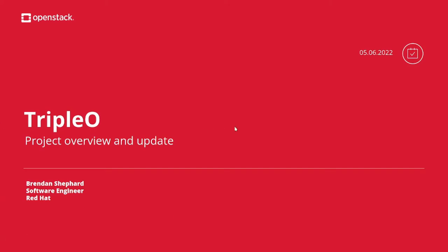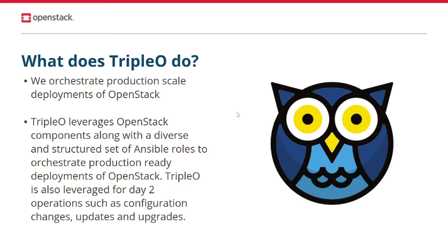My name is Brendan Shepard and I'm a software engineer working for Red Hat on the Triple O project. I'm excited to give you an update of what we've been working on over the last 12 months and what we have in the pipeline moving forward. Triple O is a deployment tool used to orchestrate production-ready deployments of OpenStack, leveraging a combination of OpenStack projects and Ansible to define your infrastructure as code and orchestrate the deployment. Triple O is also leveraged for deployments of Red Hat OpenStack Platform.